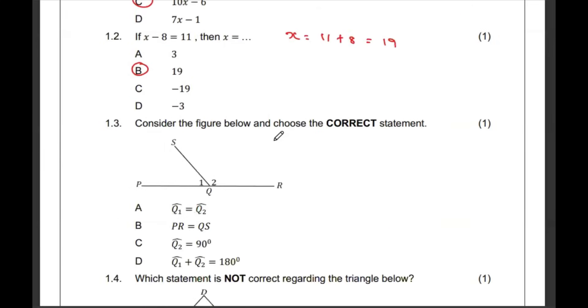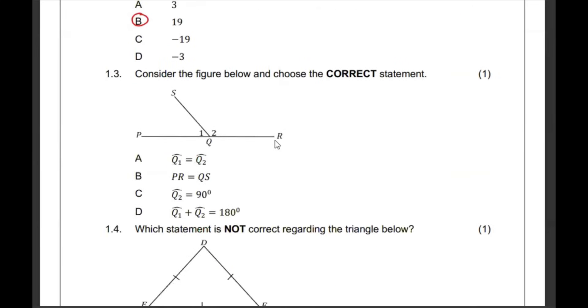Then option number 1.3, consider the figure below and choose the correct statement. Q1 and Q2, are they equal? Nope. These two are supplementary. In other words, Q1 plus Q2 must give us 180 degrees. Correct statement is D.